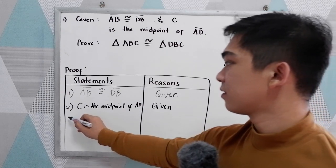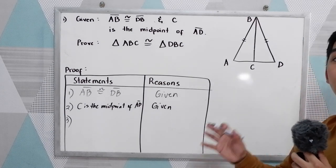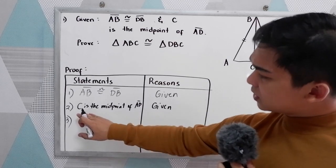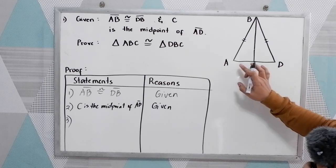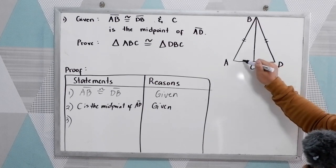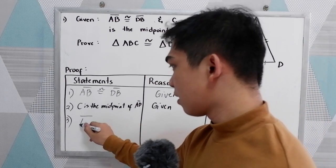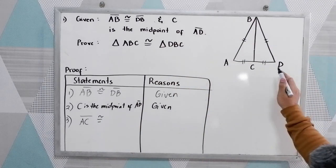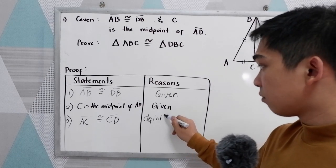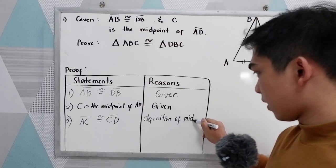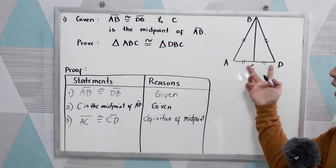After writing all the given, use your previous knowledge about definitions, postulates, and theorems. In our given, C is the midpoint of AD. We know that a midpoint bisects the segment into two equal congruent parts. So we can say that AC is congruent to CD. That is by the definition of midpoint.